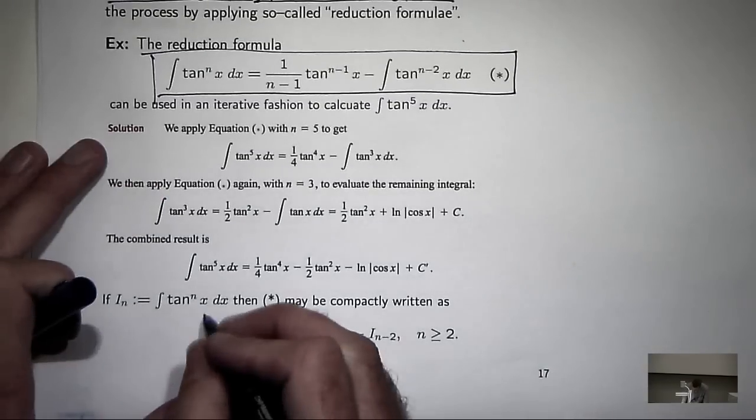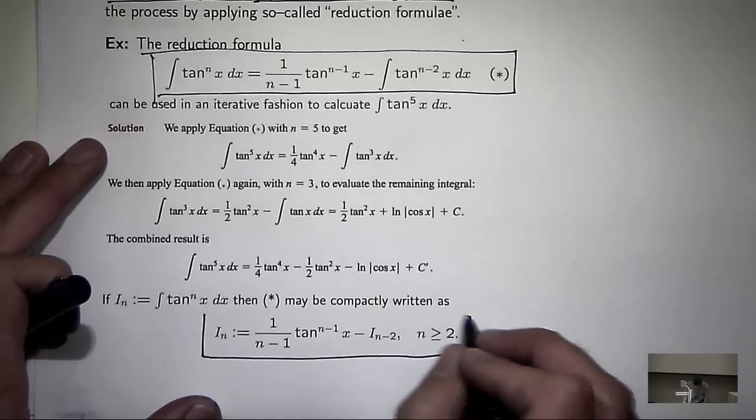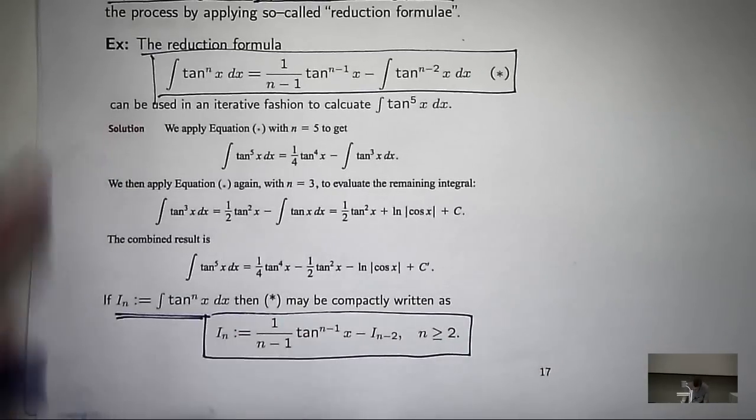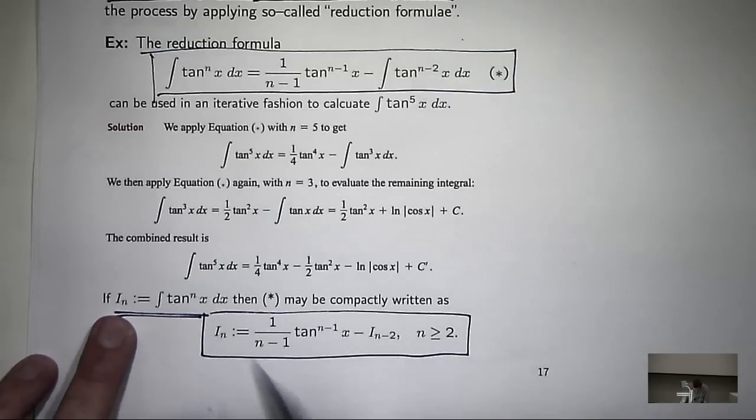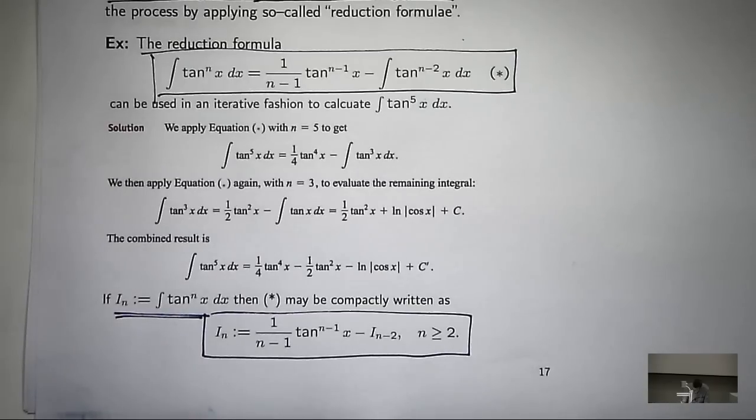Now, sometimes reduction formulae are written in a nice compact way. So basically, this i sub n is some integral, and then there's a relationship with i sub n and i sub n minus 1 or i sub n minus 2 or something like that.